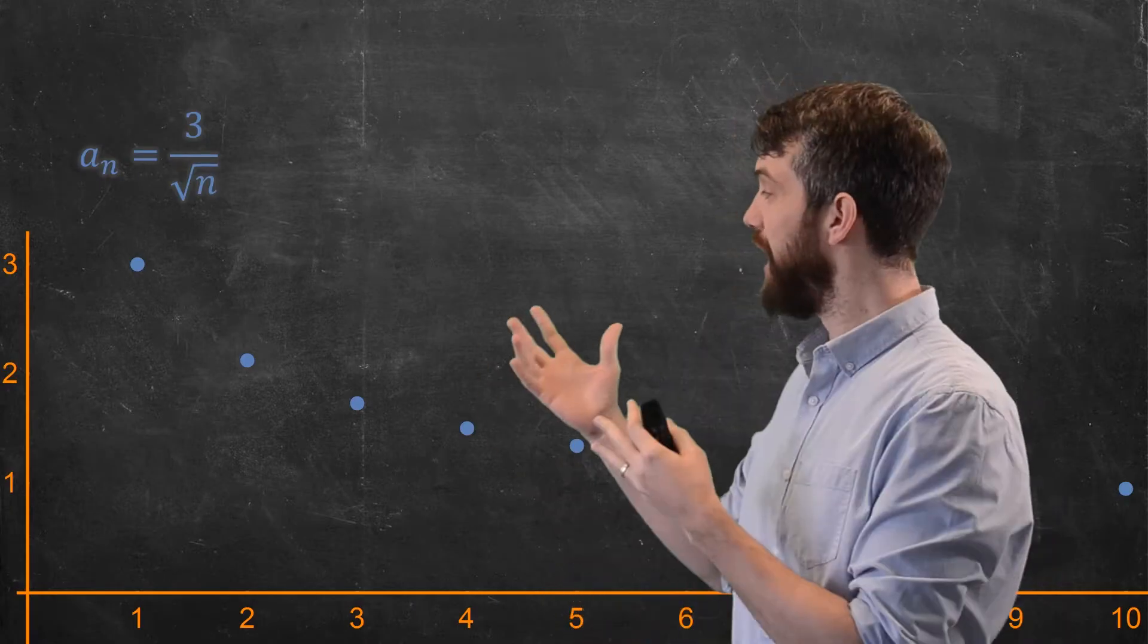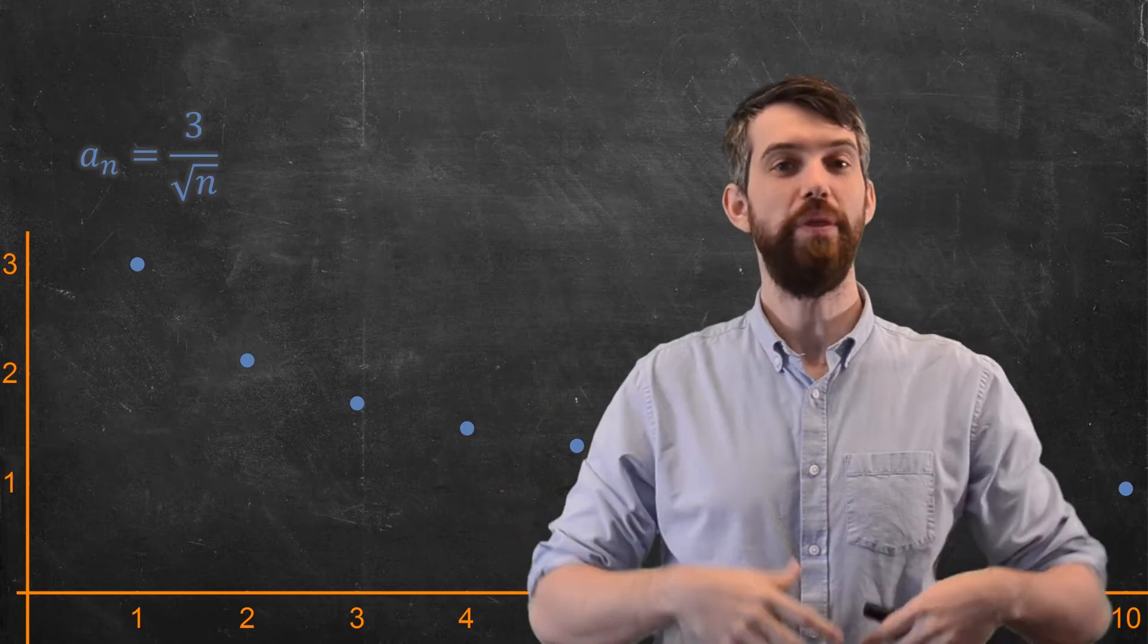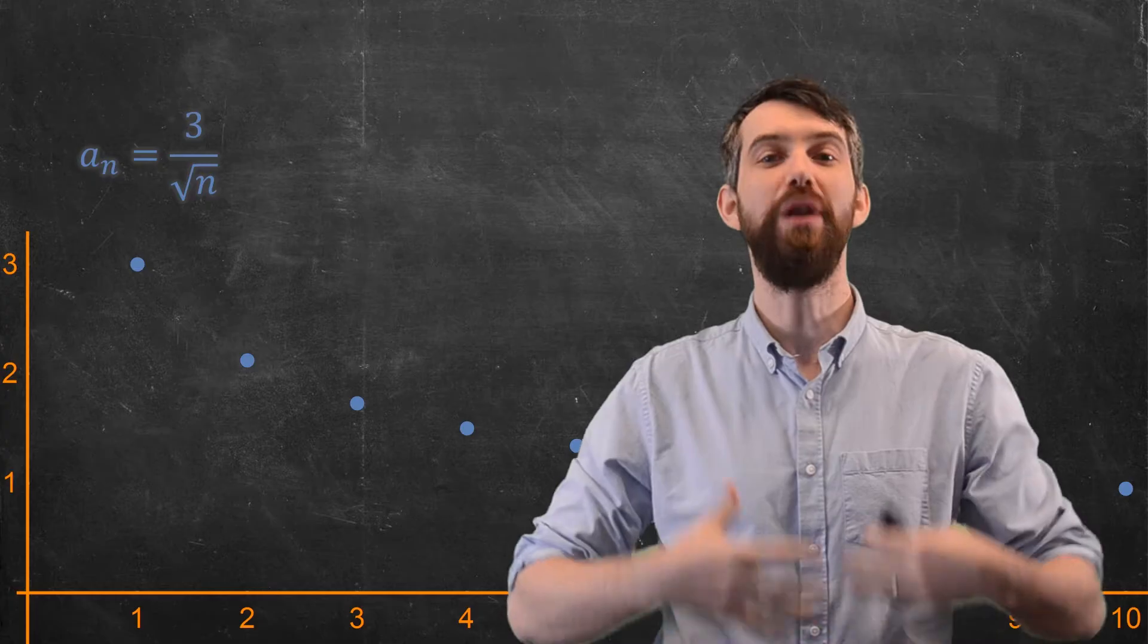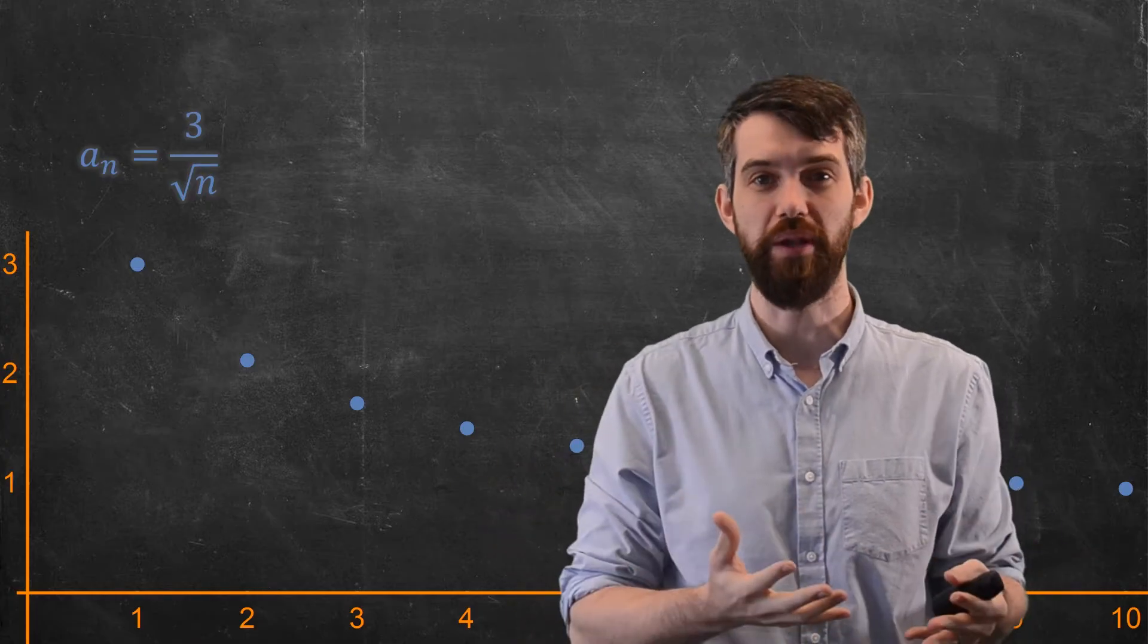Consider the graph of a sequence, something like this one, the graph of 3 divided by square root n. Now, this is a sequence, and it only has outputs at the natural numbers, numbers like 1, 2, and 3.